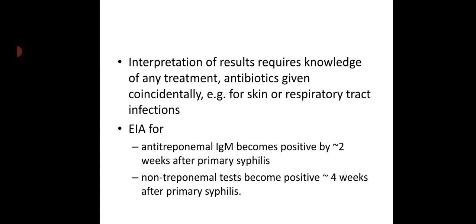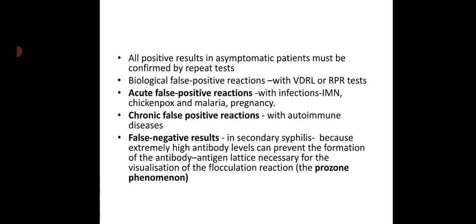Interpretation of results requires knowledge of any antibiotics given coincidentally, for example antibiotics taken for skin or respiratory infections. Enzyme immunoassay for anti-treponemal IgM becomes positive by about two weeks after primary syphilis. Non-treponemal tests become positive about four weeks after primary syphilis. All positive results in asymptomatic patients must be confirmed by repeat test. Biological false positive reactions can occur with VDRL or RPR tests.